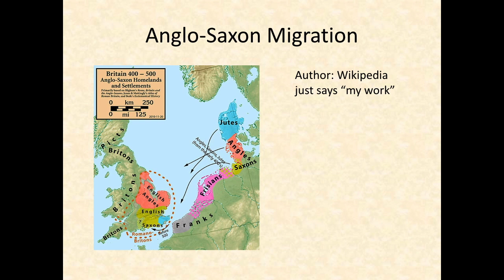Here is a reconstruction of where Germanic people might have originated and settled. I'd like to give full credit, but Wikipedia just says 'my work' without a name. As you can see, settlers came from different parts of the continent, did not all speak exactly the same language, and settled in various parts of what is now England. They were also not Christian, although we know relatively little about their beliefs.